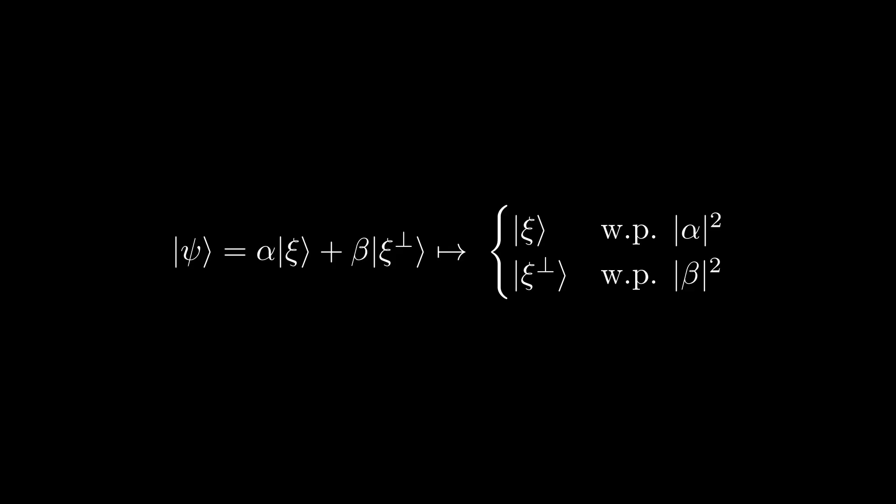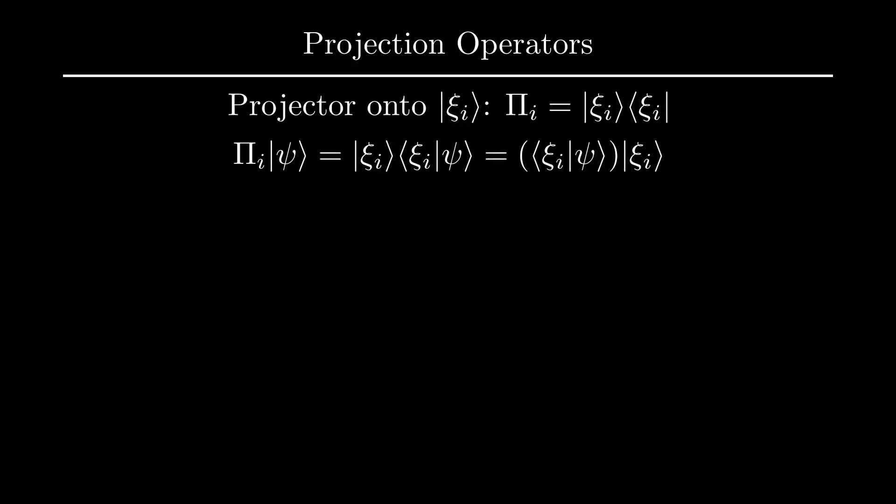When we first introduced measurements, we discussed them through the context of orthogonal measurements, where we choose some orthogonal basis to measure a state with respect to and then randomly project the state onto said basis state. Formally, we can define orthogonal measurements using projection operators. In particular, if you want to project onto a given vector, you simply join a ket and bra of this vector in this form to get a projection operator.